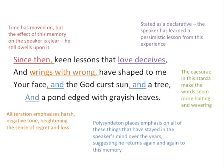There are a number of caesura in this final stanza — in the first, second, and third lines — making the words seem more halting and wavering, interrupting the normal metre and rhythm of the poem, making it all sound a little uneasy. We get a clear sense that he has not moved on. There is also use of polysyndeton — repeated 'ands': 'the keen lessons that love deceives and rings with wrong have shaped to me your face and the god-cursed sun and a tree and a pond edged with greyish leaves.' The polysyndeton places emphasis on each thing he remembers — the sun, the tree, the pond, her face — suggesting he has returned again and again to this memory.